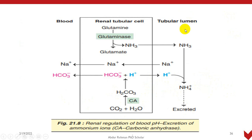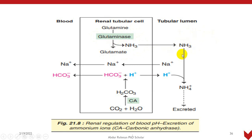From the diagram: the tubular lumen is where hydrogen is to be excreted, blood is on one side, and renal tubular cells are in between — substances are absorbed from blood and also returned to blood, and urine is excreted from the tubular lumen. Glutamine present inside the renal tubular cell is converted with the help of the enzyme glutaminase into glutamate and ammonia. This ammonia is excreted down the concentration gradient into the tubular lumen. In the tubular lumen, hydrogen is also being excreted simultaneously, so hydrogen combines with ammonia to form ammonium ion. Once ammonium ion is formed, it cannot return to the tubular cell and is excreted into the urine, making urine acidic and reducing its pH.